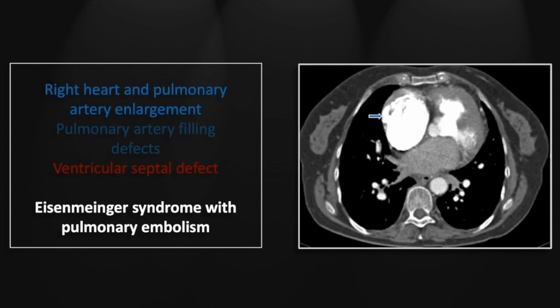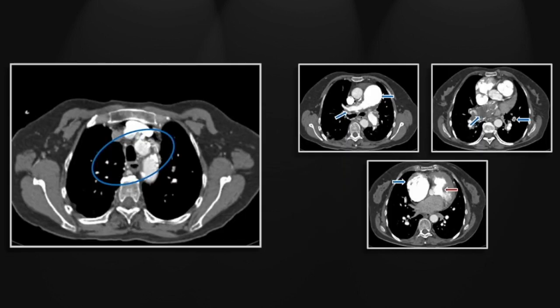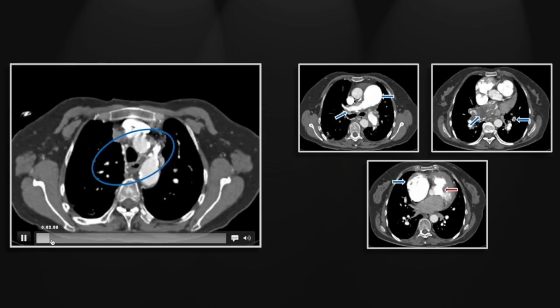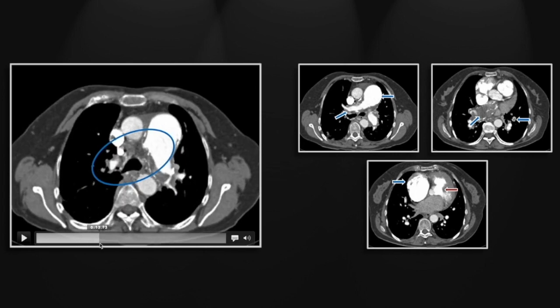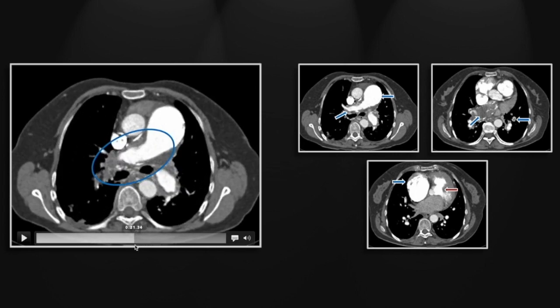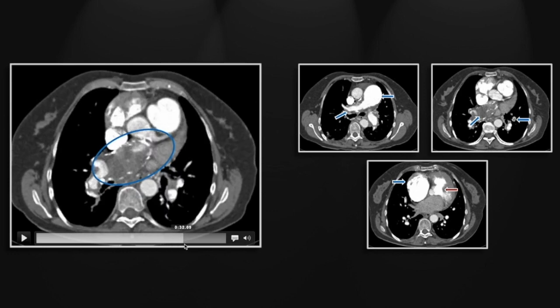Here you see the pronounced enlargement of the right atrium, and the membranous ventricular septal defect with nice demonstration of right-to-left shunting. The left atrium shows no contrast opacification, and the dense contrast of the right ventricle is passing directly into the left ventricle. Appreciate the marked enlargement of the pulmonary arteries and that chronic wall thickening and calcification.